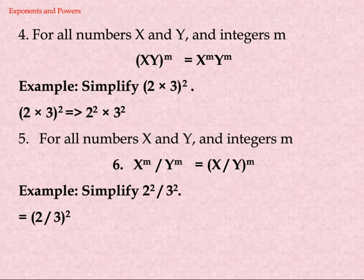Law 5: For all numbers x and y and integer m, (x/y)^m = x^m ÷ y^m. Example: simplify 2 power 2 over 3 power 2. 2^2 ÷ 3^2 = (2/3)^2.